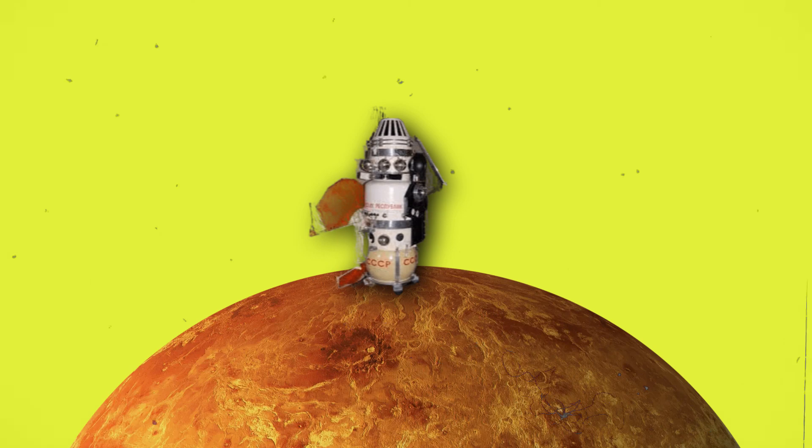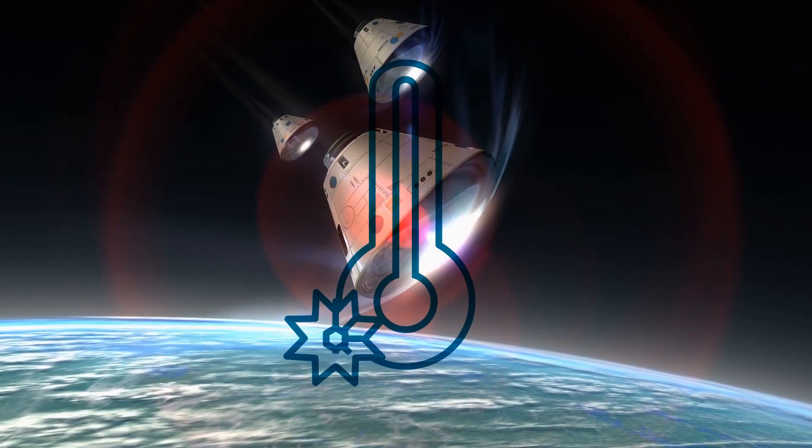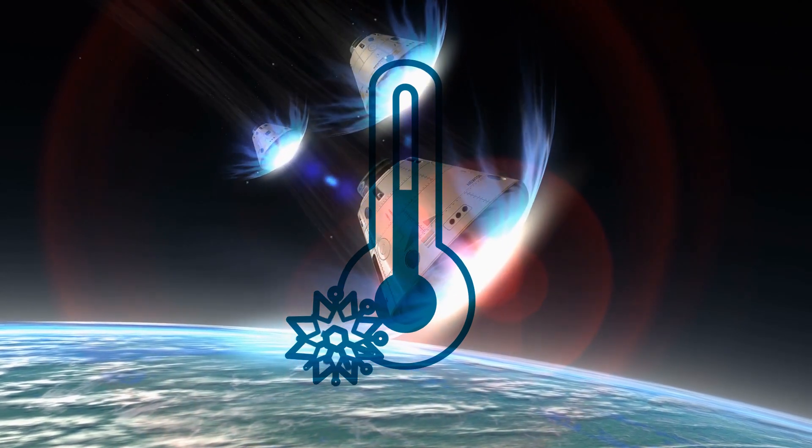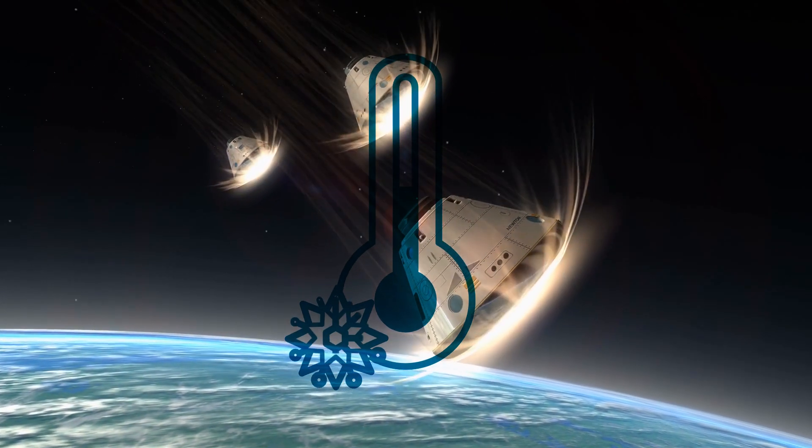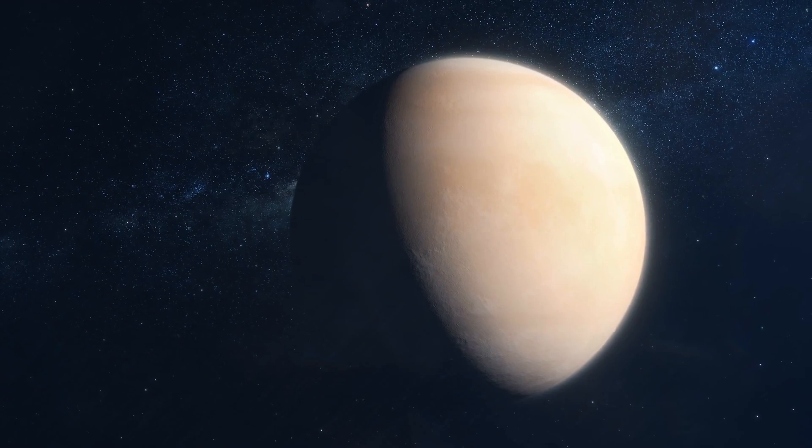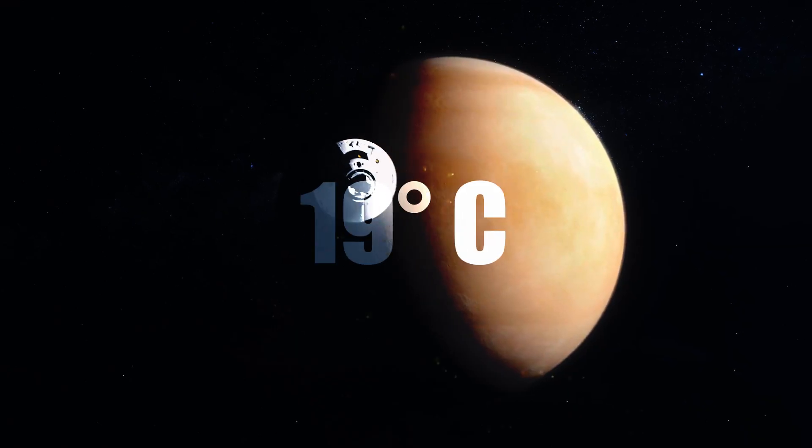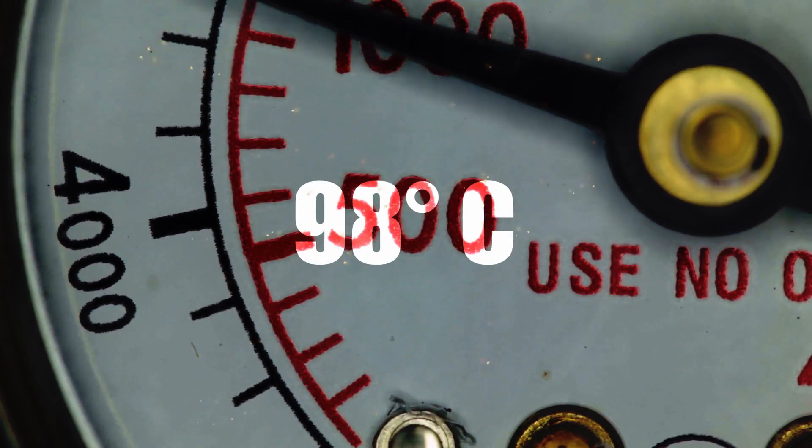In 1970, Venera 7 became the first probe to land on the planet. This probe had a very powerful cooling system, which allowed it to operate in Venus's hellish environment for 23 minutes. The probe transmitted geological findings on the temperature, pressure, and atmosphere density to Earth.